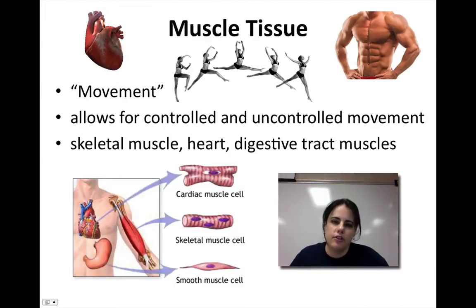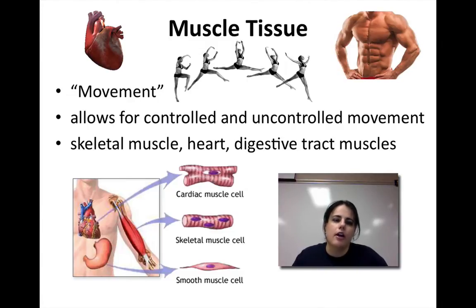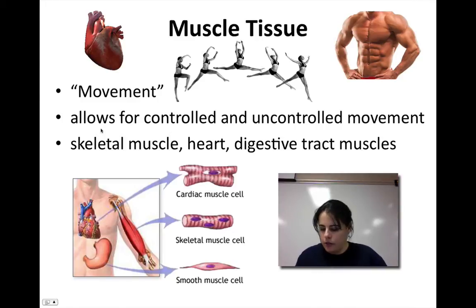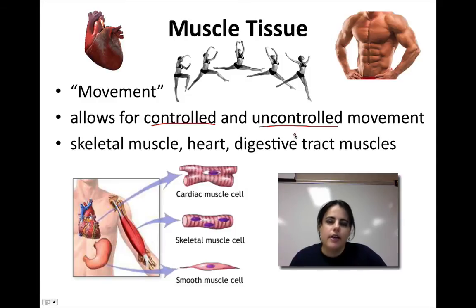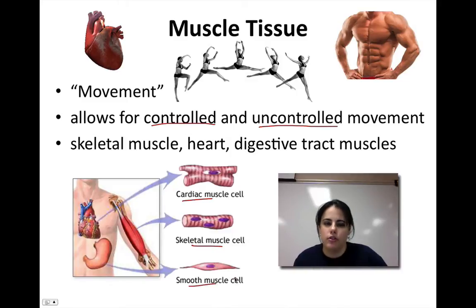The last type of tissue is called muscle tissue, and it's obviously used for movement. What most people don't know is that there are actually more types of muscle in your body than just your biceps and triceps. Besides allowing for controlled and uncontrolled movements, we have three different types of muscle tissue: cardiac muscle tissue, skeletal muscle tissue, and smooth muscle tissue.